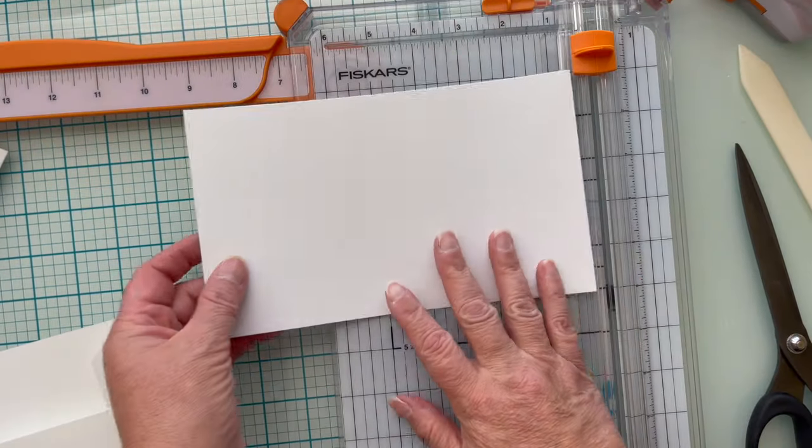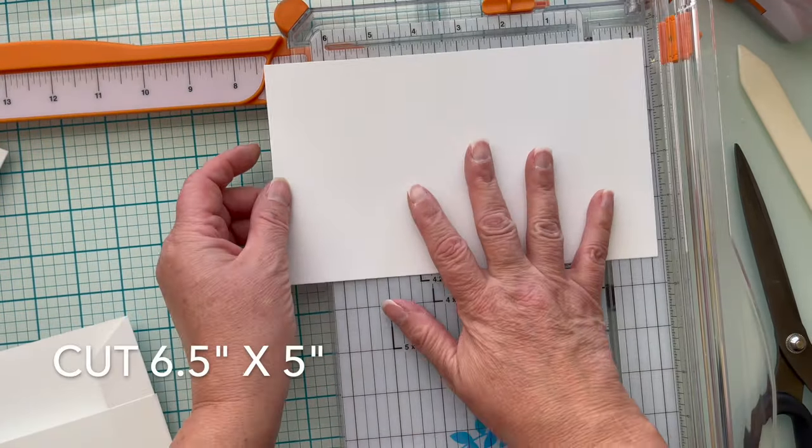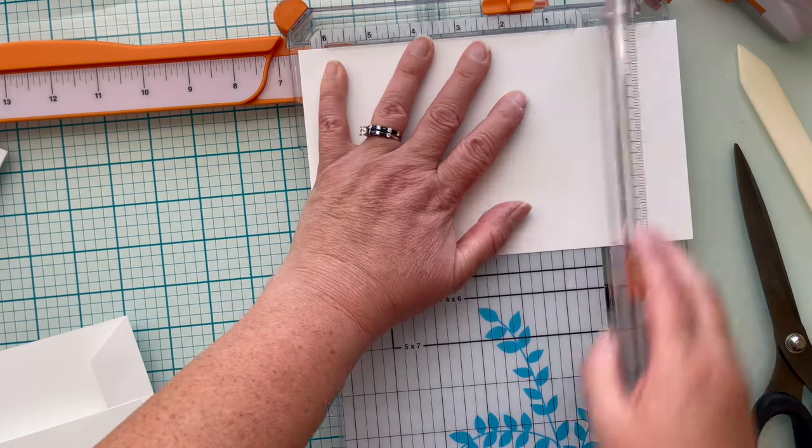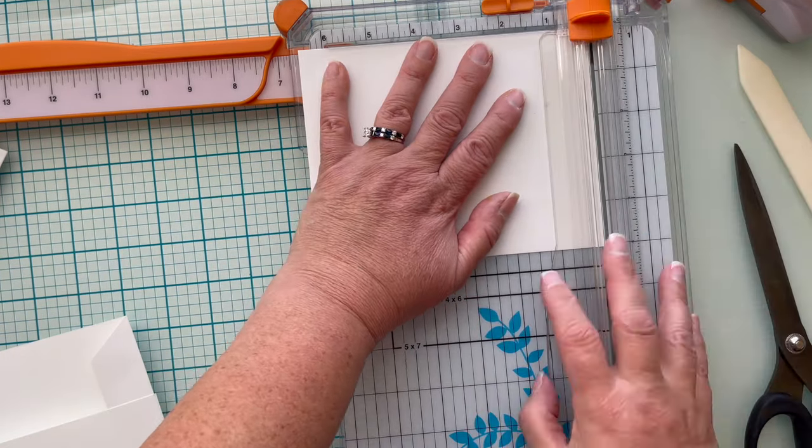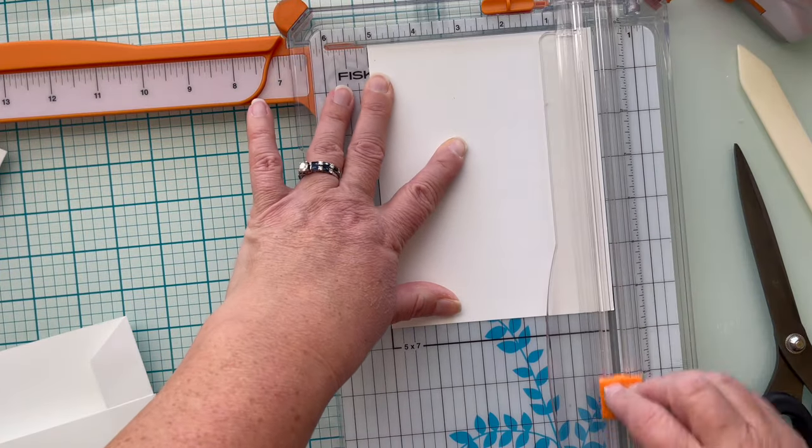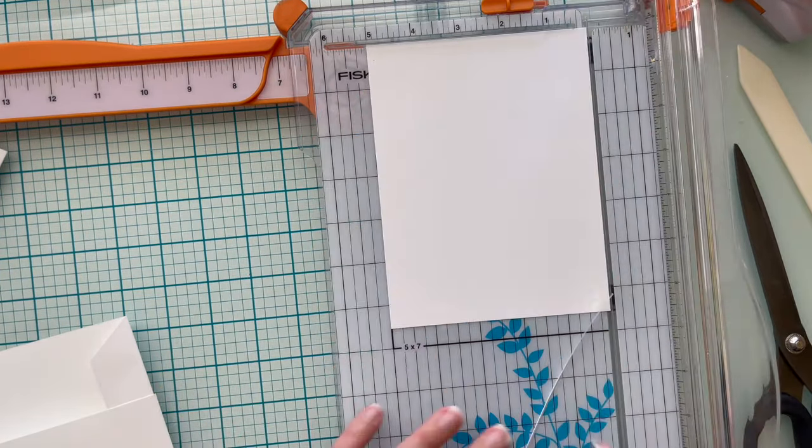The second sheet of cardstock, this one happens to be a scrap. I am going to cut it to six and a half by five and you'll see that this is a scrap because I'm actually going to even it up and there we go.